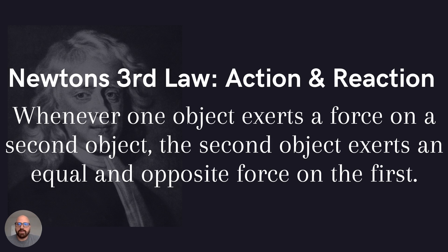Newton's third law, action and reaction. Whenever one object exerts a force on a second object, the second object exerts an equal and opposite force on the first. If object A exerts a force on object B, object B also exerts an equal amount of opposite force into object A. So there's going to be an equal amount of force until it evens out, until the motion starts.